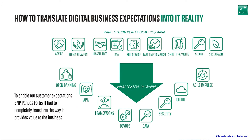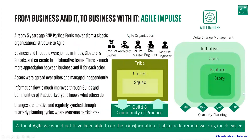The last element is the Agile Impulse icon — the name of our internal organization. The way we organize has for some time been fully agile, combining business and IT together. I propose we move on so that John can take over on the topic of Agile Impulse within our organization.